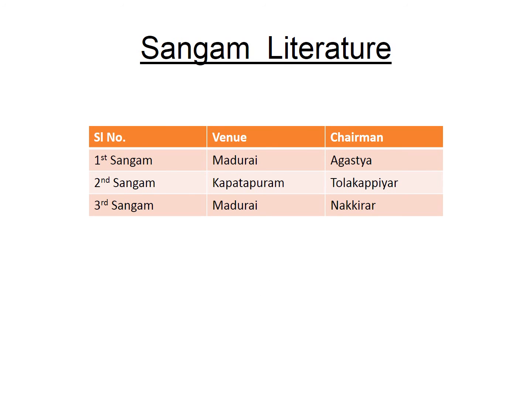Three Sangams were held during the Sangam period. Sangam means the assembly of Tamil poets. The first Sangam was held at Madurai under the chairmanship of Agastya. The second Sangam was also held under the chairmanship of Agastya. The third Sangam was held at Madurai under the chairmanship of Nakkirar.